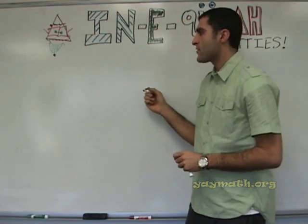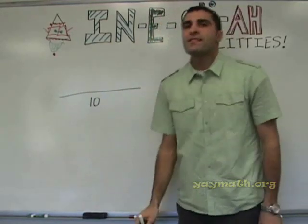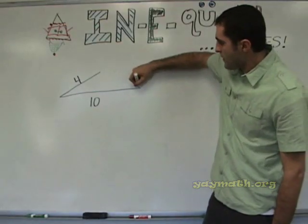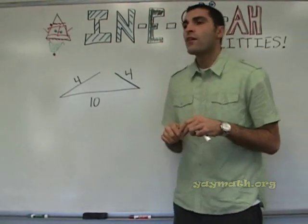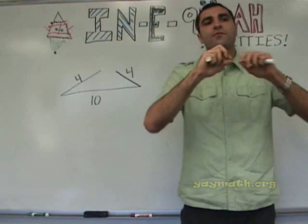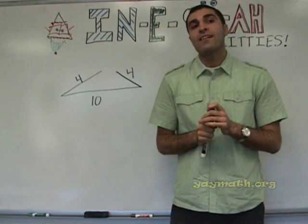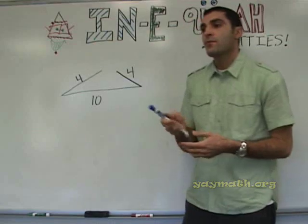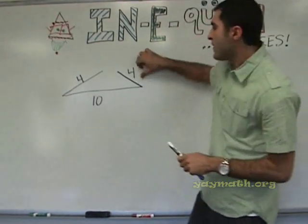Let's think about the size of a triangle. Let's say you have a triangle with a base of ten, and a leg of four, and another leg of four. Could you make a triangle with sides ten, four, and four? If I gave you pieces of string — one ten inches, one four inches, one four inches — could you make a triangle? The two smaller sides aren't long enough; they can't reach each other. They don't add up to ten.